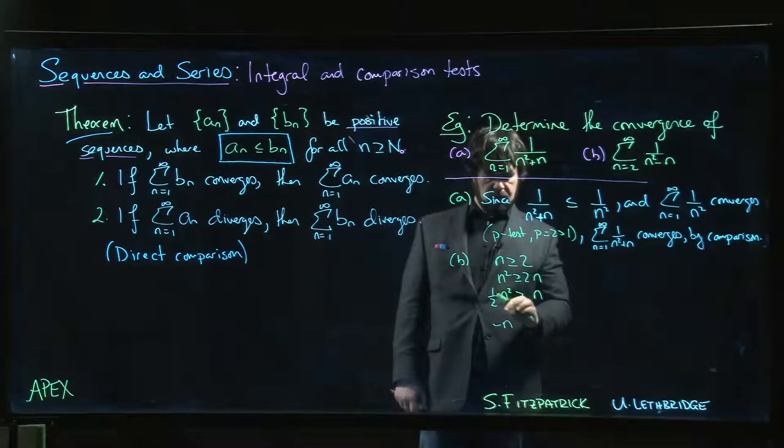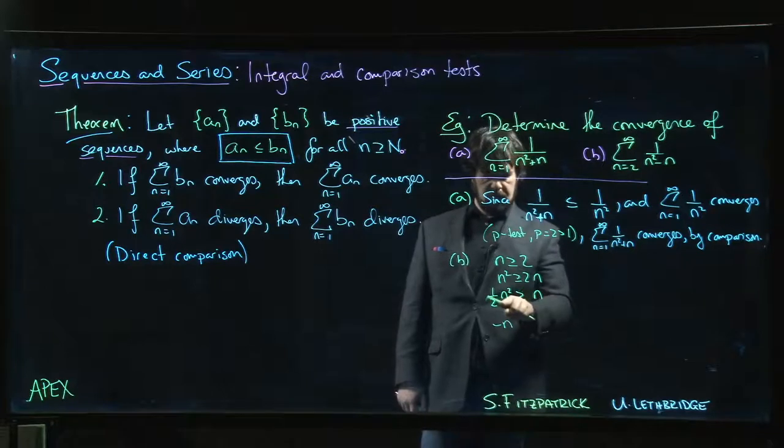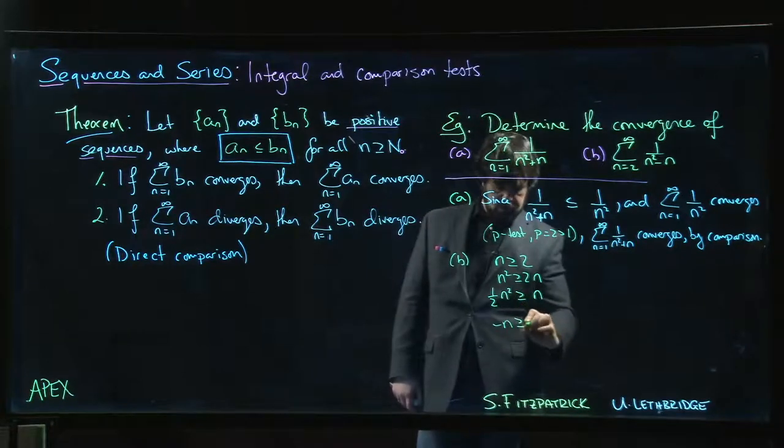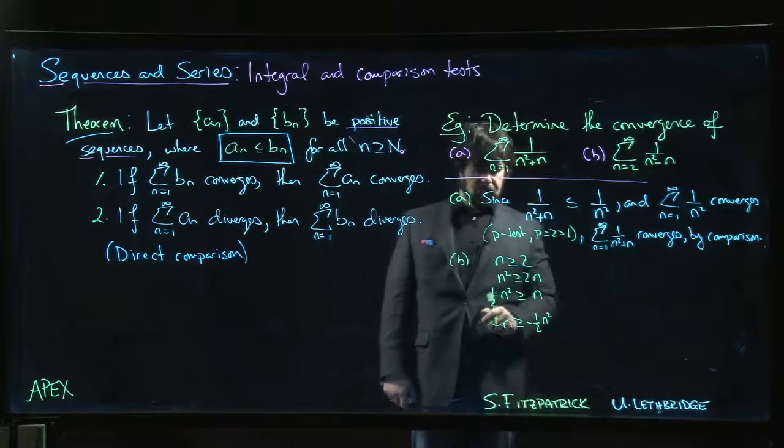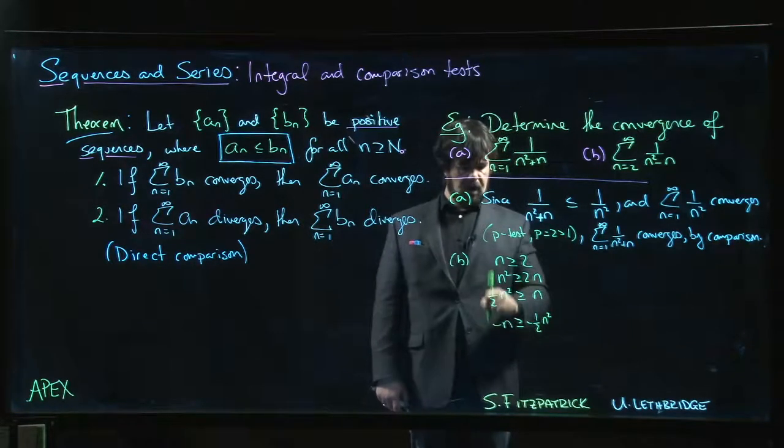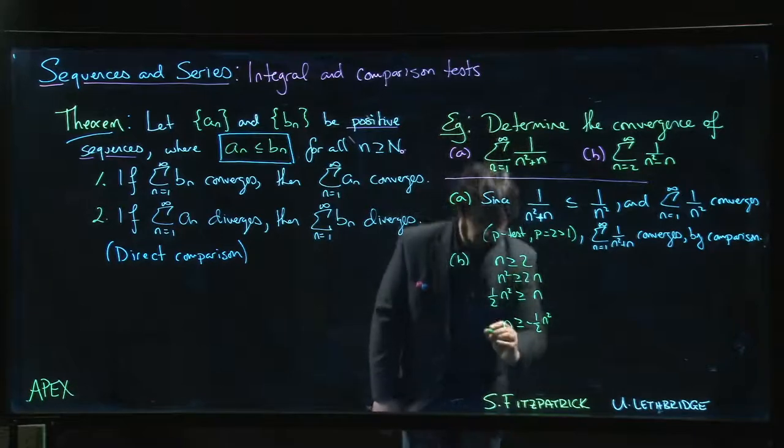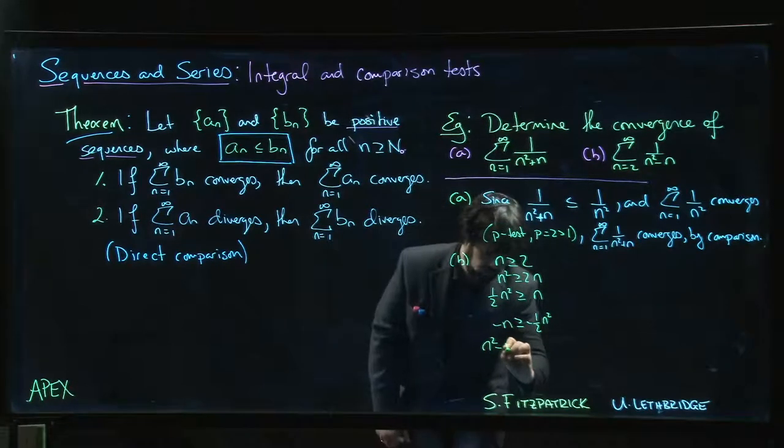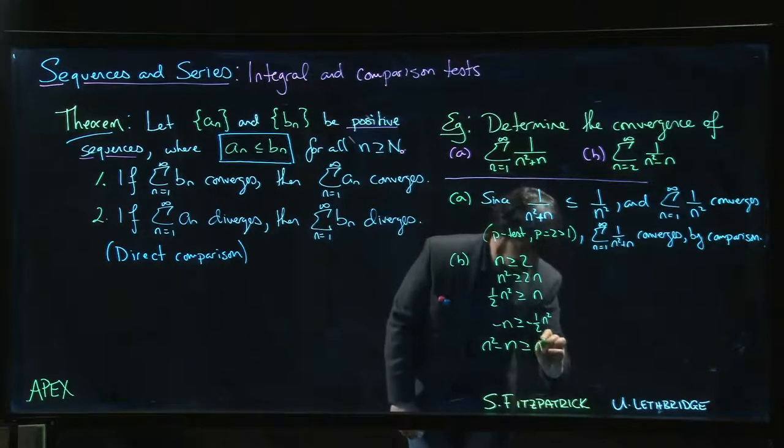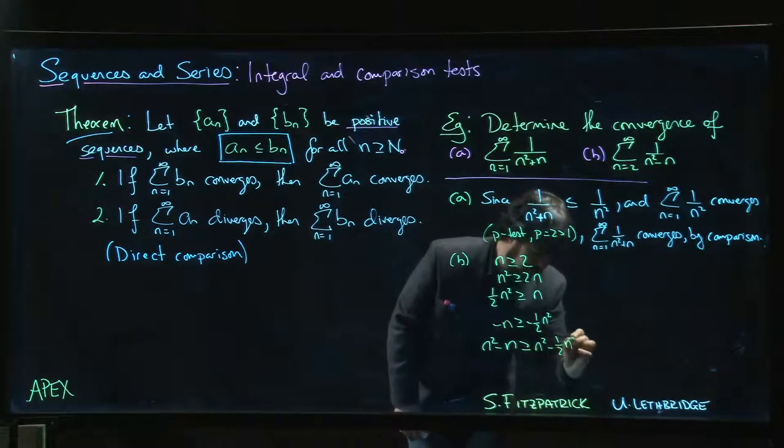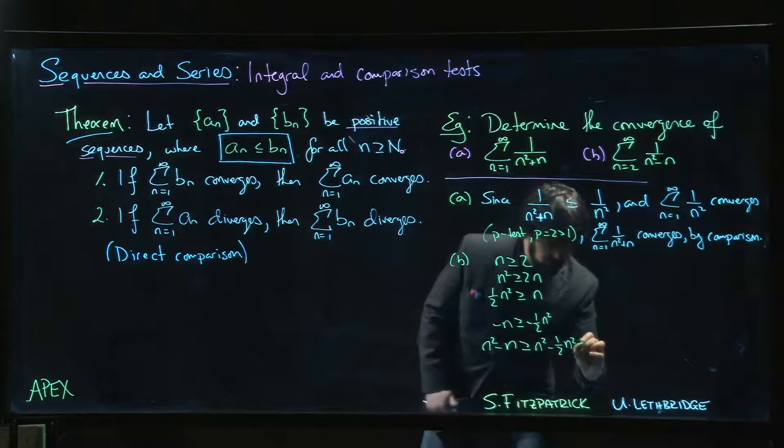If I reverse this—move this over—minus n will be bigger than or equal to -½n². I just swap the two sides. And now I can add n² to both sides: n² - n ≥ n² - ½n², which is ½n². Very good. So with all that, now I can say that I have my solution.